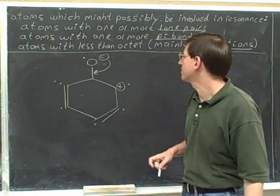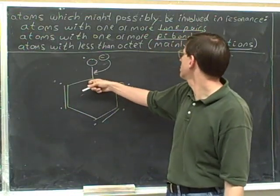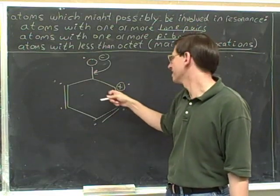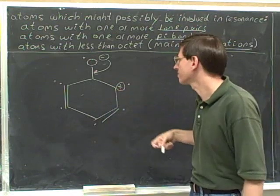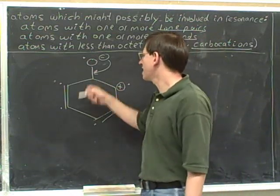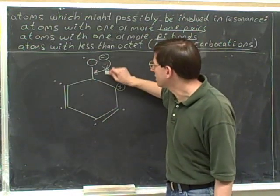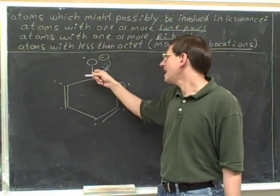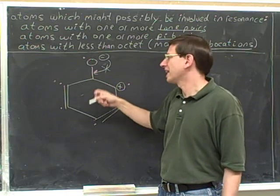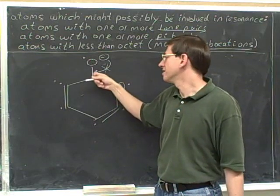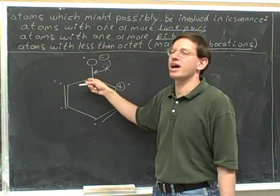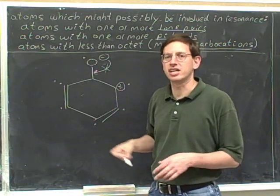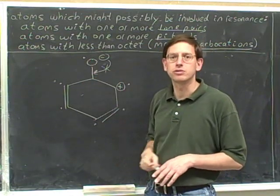If it's not clear that this carbon has a full octet and no lone pairs, and is not a carbocation, you need to go back and work more on bond line notation before tackling resonance structures. Assuming it's obvious that this carbon has no lone pairs, no pi bonds, and is not a carbocation — a carbocation must have a positive charge — then there's no dot here. That means this is not a legal resonance arrow, because the head involves this carbon, forming a new pi bond with a carbon that is not a candidate for resonance.